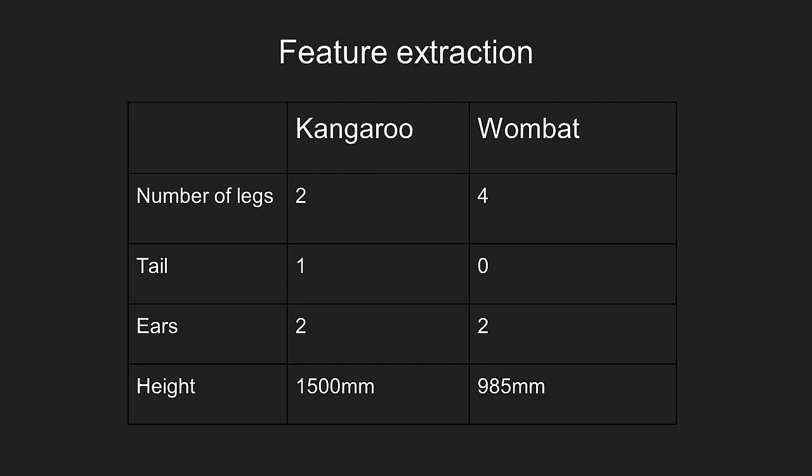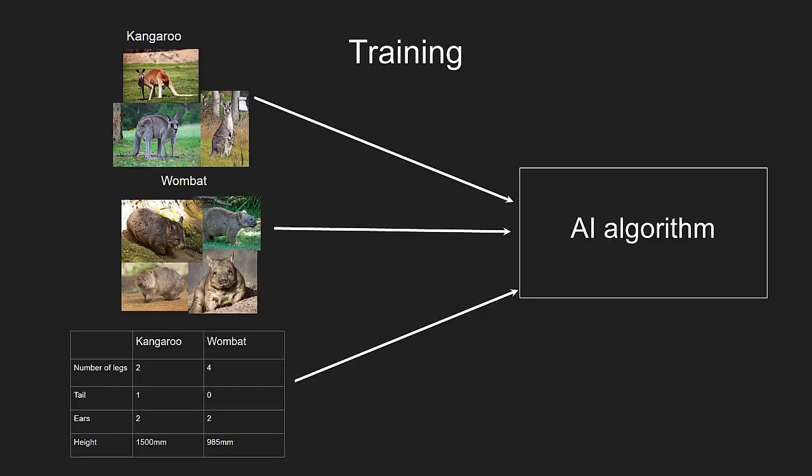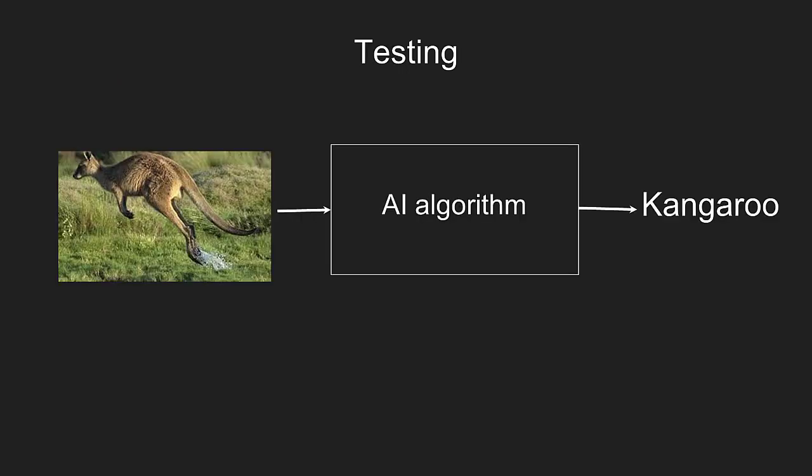The next process involves training the AI algorithm based on the labels and features. This is done by providing the machine with lots and lots of images that include labels and features data. The more examples we provide, the better the algorithm will be. Next, we see if the machine will correctly label an image that we give it. If we feed it new images of kangaroos and wombats, it should look at the features it sees in the image and label it with either kangaroo or wombat.